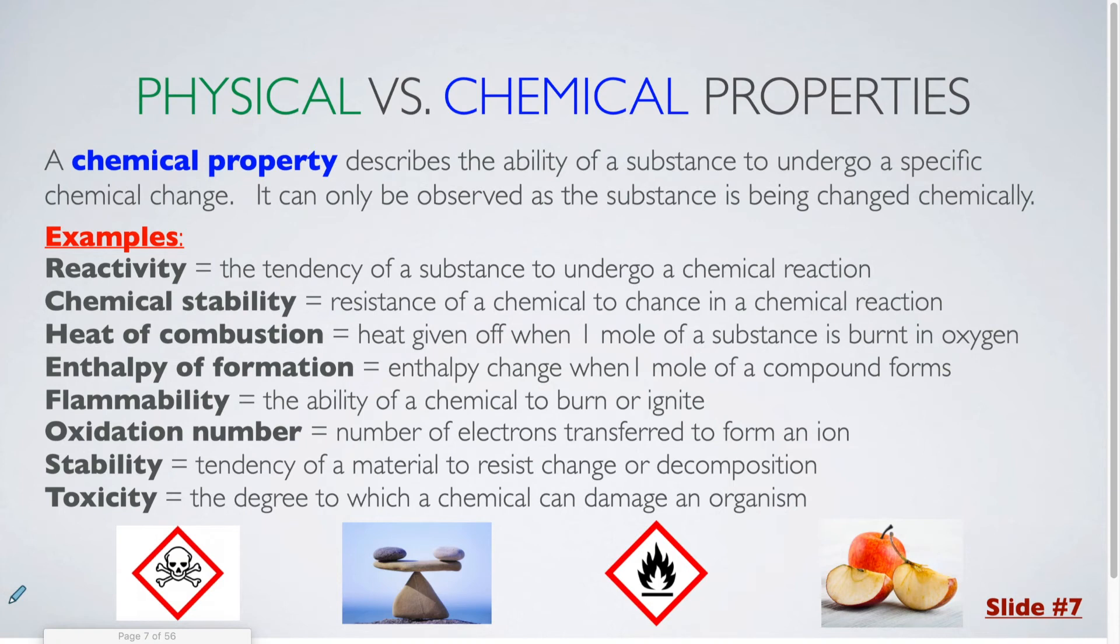Next up heat of combustion. That is the heat given off when one mole of substance is burnt in oxygen. Enthalpy of formation is the enthalpy change when one mole of a compound forms. Flammability: the ability of a chemical to burn or ignite. Oxidation number: the number of electrons transferred to form an ion. Stability: the tendency of a material to resist change or decomposition. And finally toxicity: the degree to which a chemical can cause damage to an organism. So all of these are examples of chemical properties which you would only be able to observe during the actual changing process.